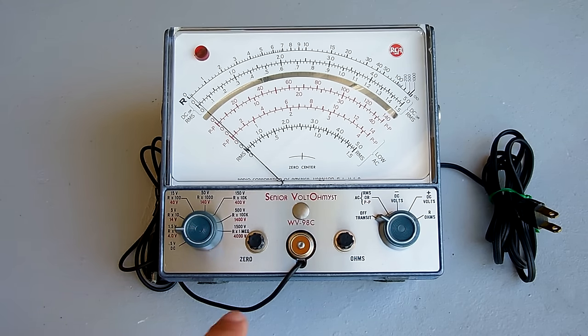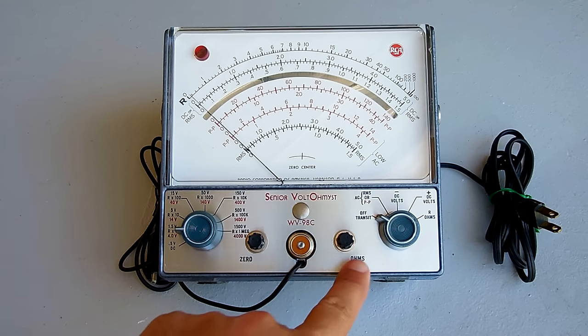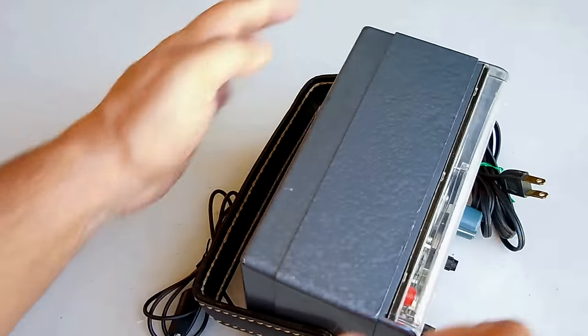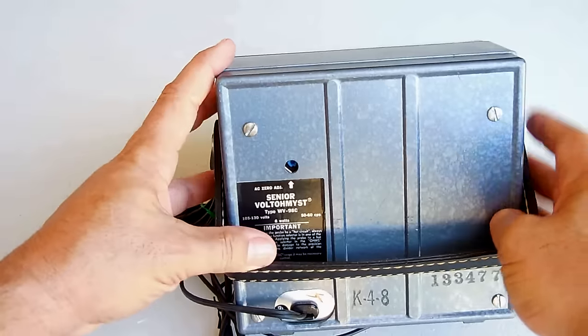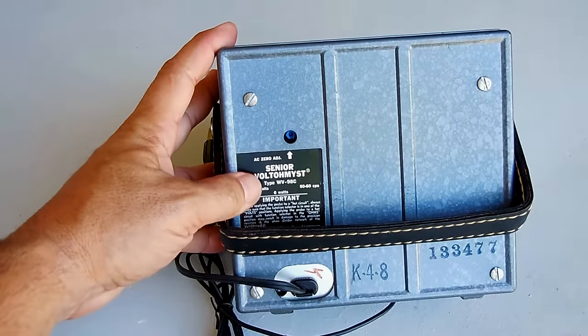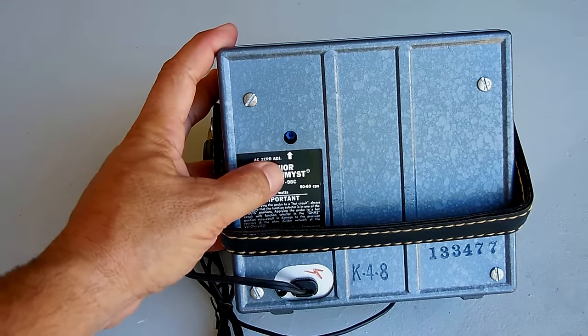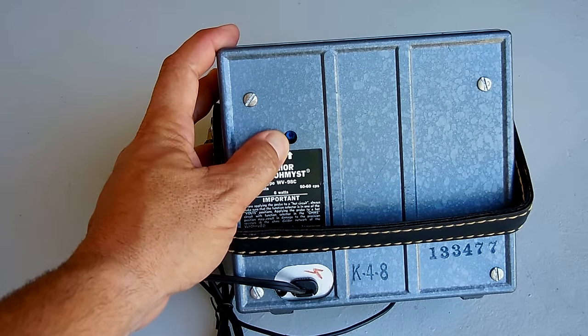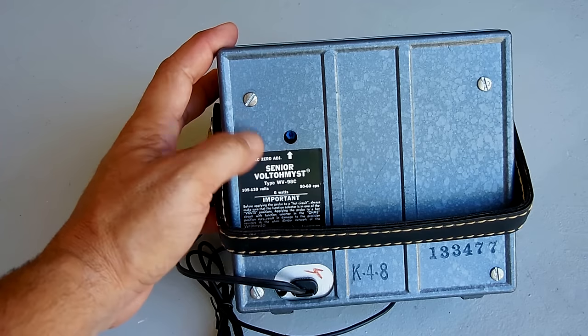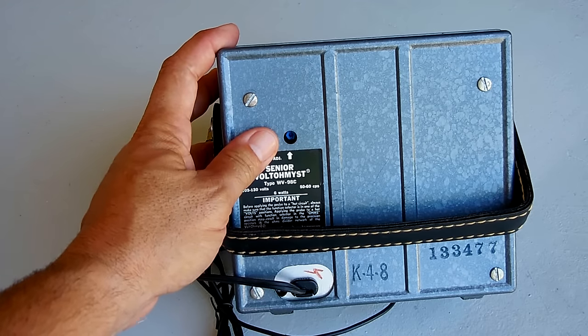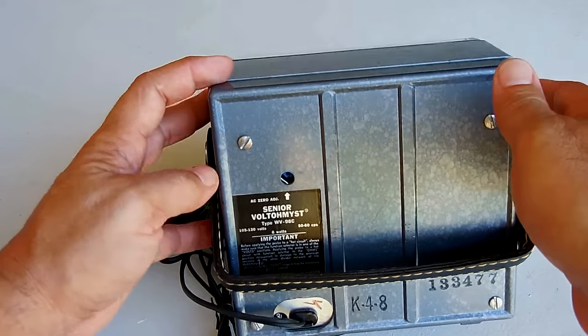As you can see, you can make a few adjustments. There's a zero knob, there's an ohms adjustment knob. And on the back of the unit, let me turn this around, right over here, it says AC voltage adjustment. You can go through this hole to adjust the AC voltage. And behind this cover, which you'll see in a minute, there are three more adjustments you can make if needed.